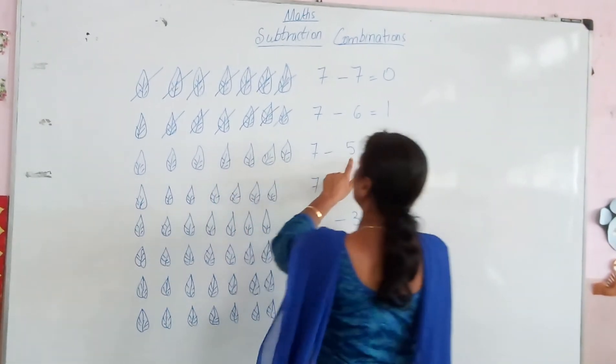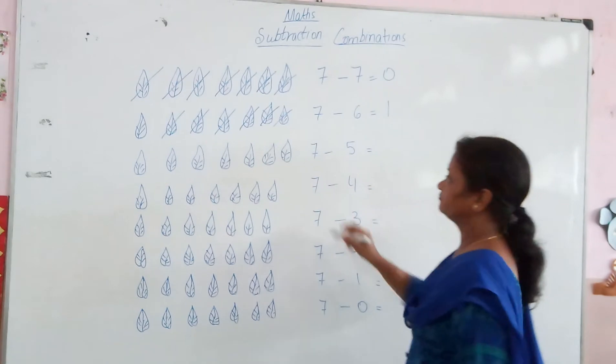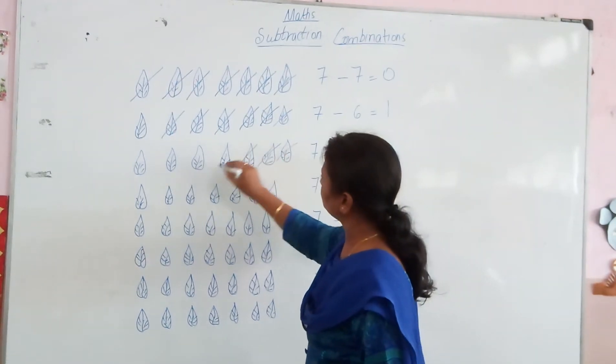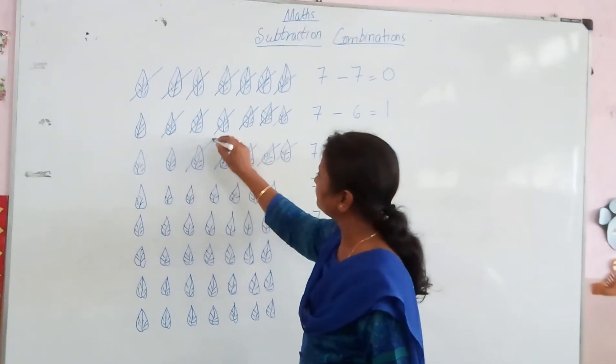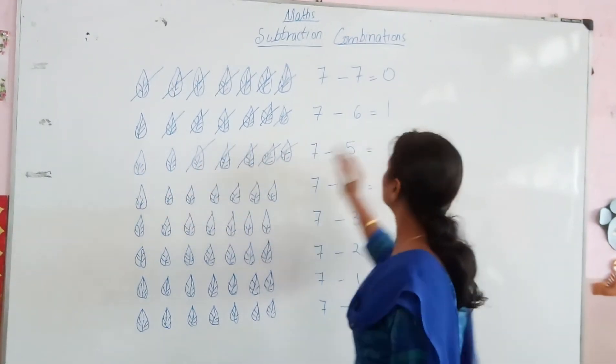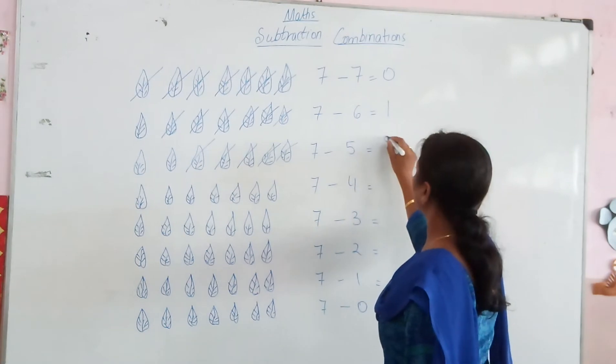Right? 5. 1, 2, 3, 4, 5. How many leaves are left? 2. So we have 2.